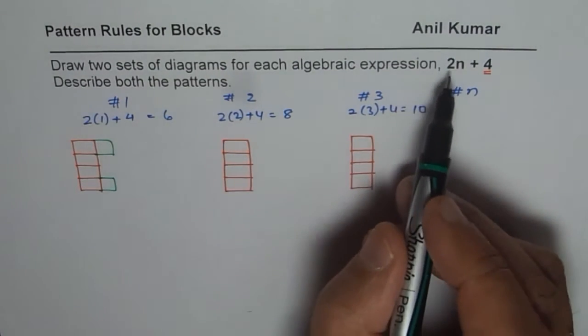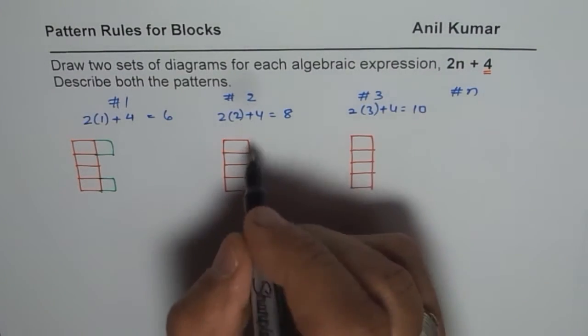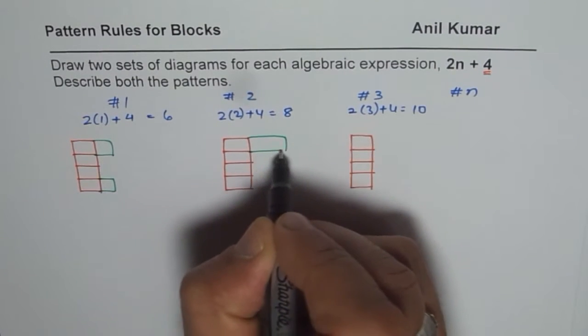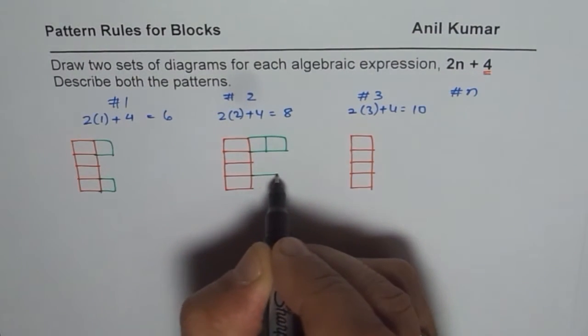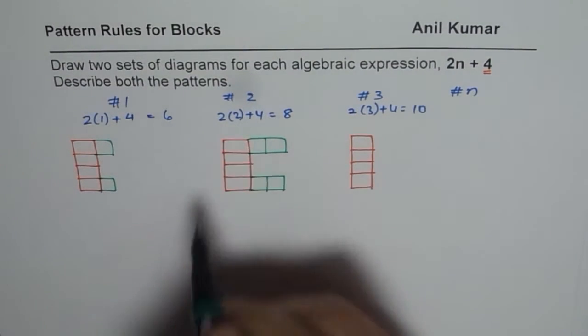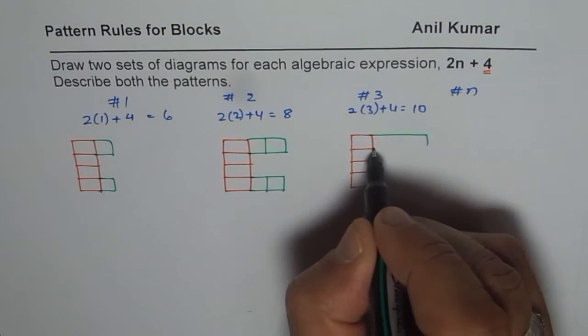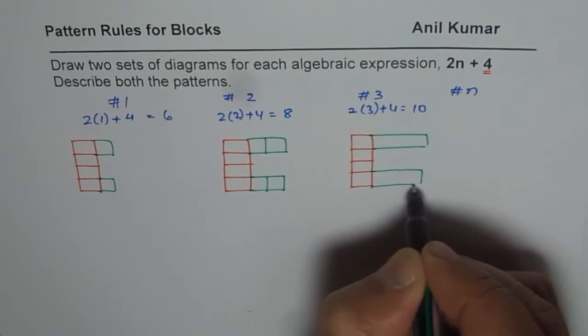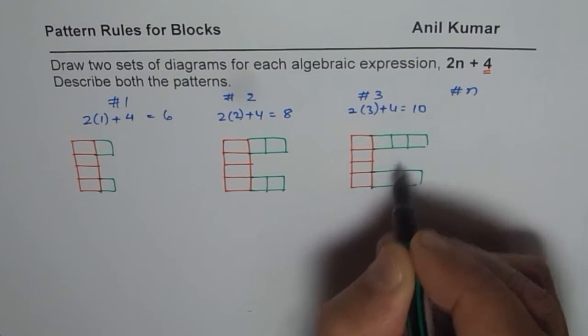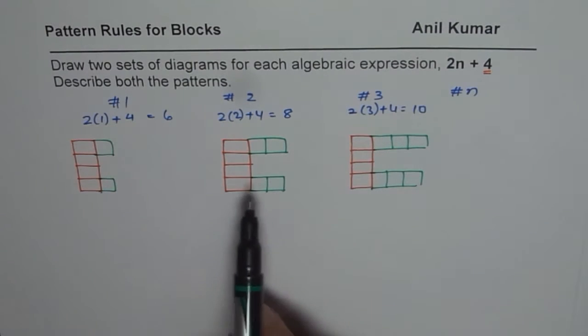For figure 2, I have four fixed plus 2 times 2, which means two on each side. For figure 3, 2 times 3 means I put three blocks here: one, two, and three. This diagram represents the algebraic expression. We've completed one part.